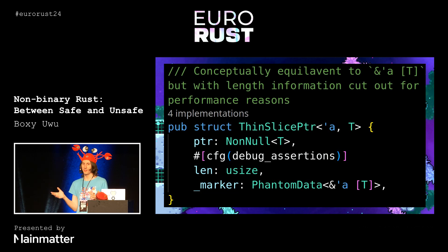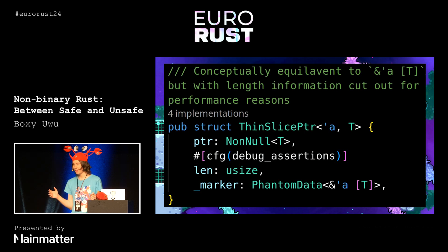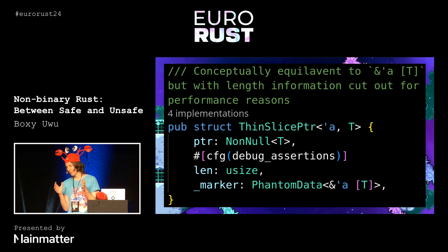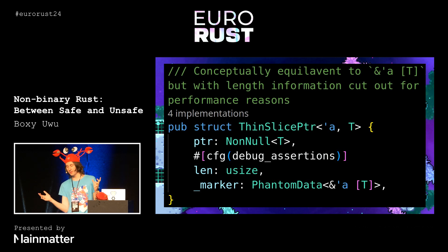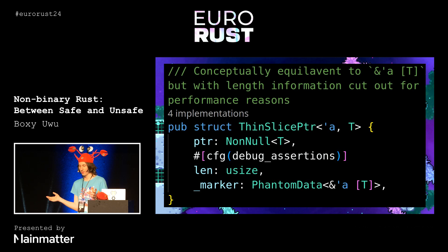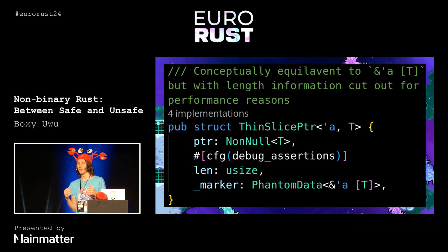An interesting thing about doing these kinds of abstractions is that it consolidates everything into one location, so you can have debug assertions for some of your safety invariants. Previously we had all of those pointers and didn't know the length, so we were just blindly doing pointer arithmetic, and we didn't really have any checks that we tracked the length information correctly.